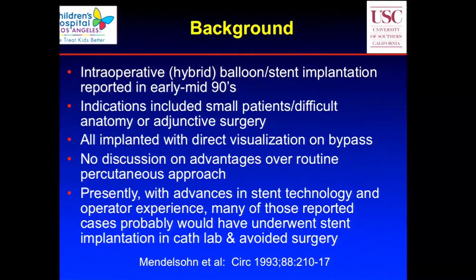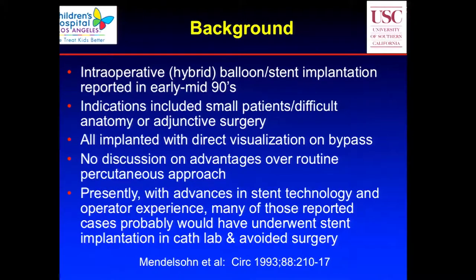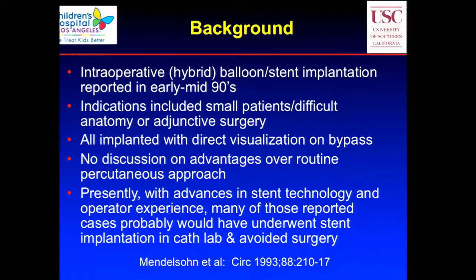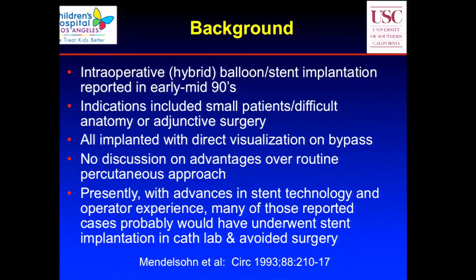Intraoperative stenting is not a new concept. It was first reported in 1993 by Mendelsohn at the University of Michigan. They discussed intraoperative stenting with indications being small patients, difficult anatomy, or adjunctive surgery — all implanted using direct vision on bypass. They didn't really discuss advantages over routine percutaneous approach. Given the last decade's improvement in technology — smaller delivery systems, new stents, and operator experience — many of those patients formerly done in the operating room for that specific reason can now be done in the cath lab.